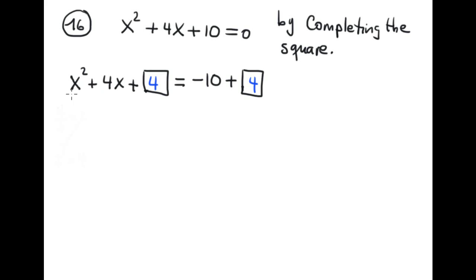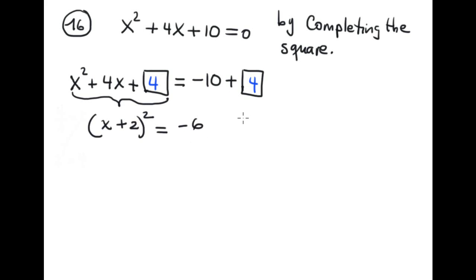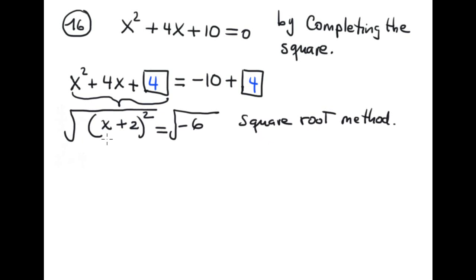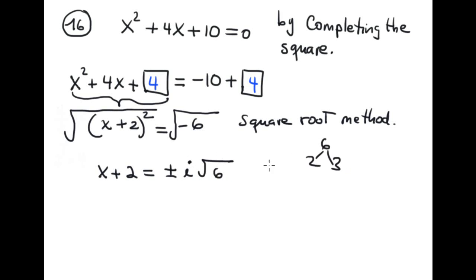This trinomial is a perfect square; the factorization is (x + 2)² — because √4 = 2 and the x term gives x. On the right-hand side we have −10 + 4 = −6. Now ready to apply the square root method: x + 2 = ± i√6. Since 6 = 2·3 with no repeated factors, we cannot simplify further.